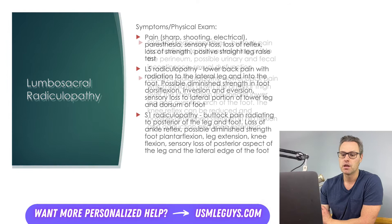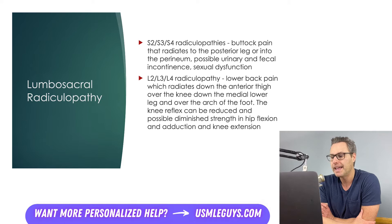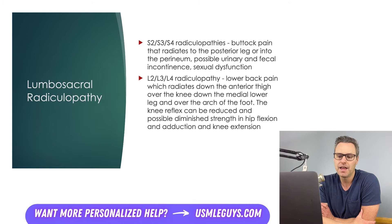Although less common, S2, S3, and S4 radiculopathies will typically also involve buttock pain that radiates to the posterior leg or into the perineum, and this can result in urinary and fecal incontinence as well as sexual dysfunction. The L2, L3, and L4 radiculopathies can cause lower back pain that radiates down the anterior thigh, over the knee, and then down the medial lower leg and over the arch of the foot. The knee reflex could be reduced, and there might be weakness in hip flexion, adduction, and knee extension. Testing you on these radiculopathies could be a good way to test your knowledge of nerve distribution, so don't be surprised if you see something like this.